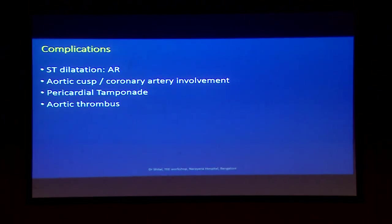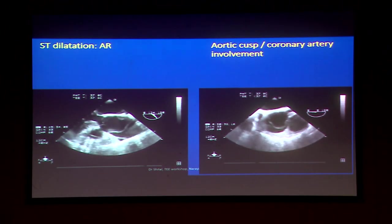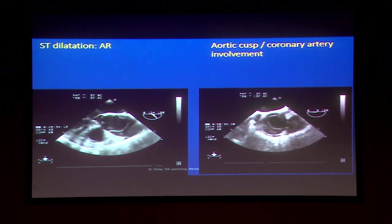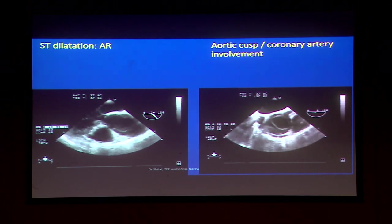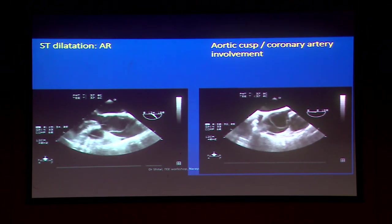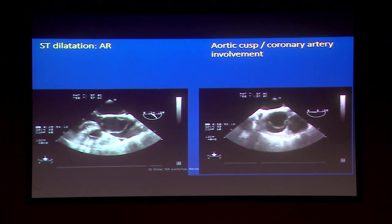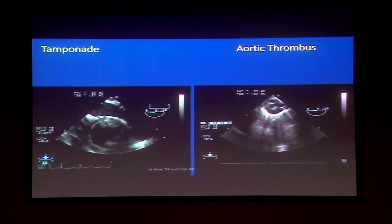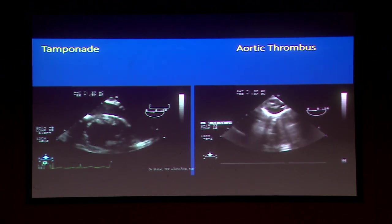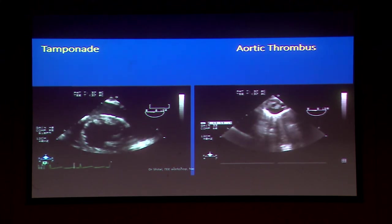Complications with dissections: ST dilatation, aortic regurgitation, aortic valve involvement, coronary artery involvement, tamponade, and aortic thrombus. Shown here are: ST dilatation resulting in AR, involvement of the left main coronary artery in the dissection flap, tamponade very classically seen as almost circumferential effusion. In a worse scenario, you may even see thrombus in the pericardium, which is quite a grave sign.